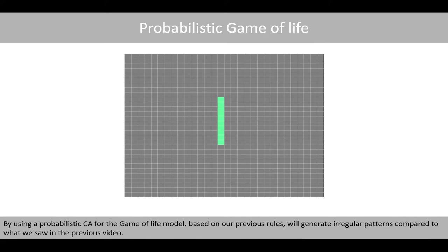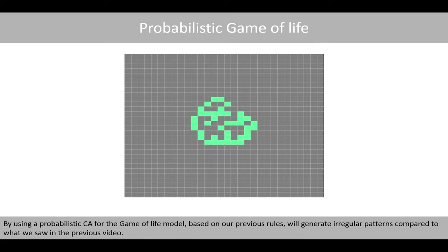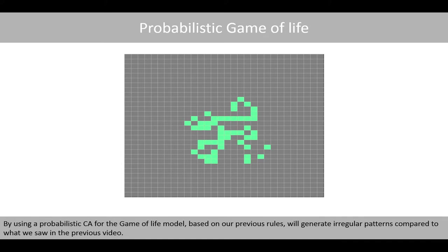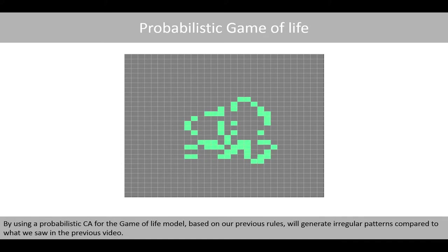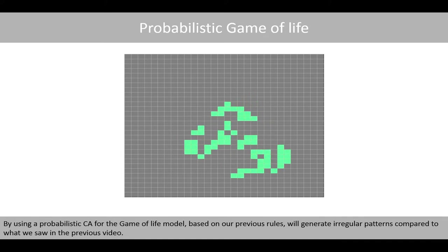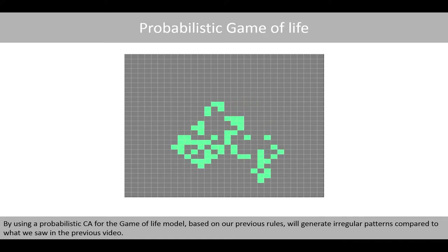By using a probabilistic cellular automaton for the Game of Life model, based on our previous rules, we generate irregular patterns compared to what we saw in the previous video.